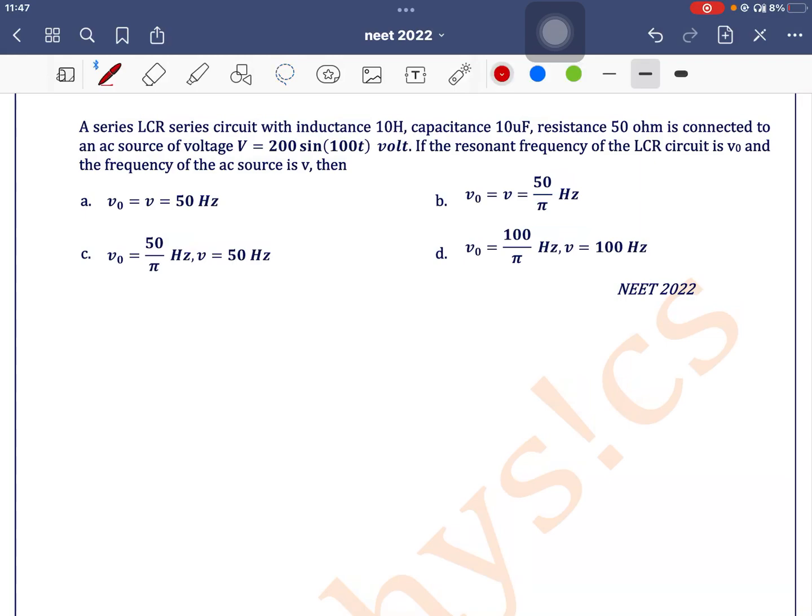A series LCR circuit with inductance 10 Henry, capacitance 10 microfarad and resistance 50 ohm is connected to an AC source of voltage 200 sin of 100T volt. Okay, so V is given as 200 sin of 100T.